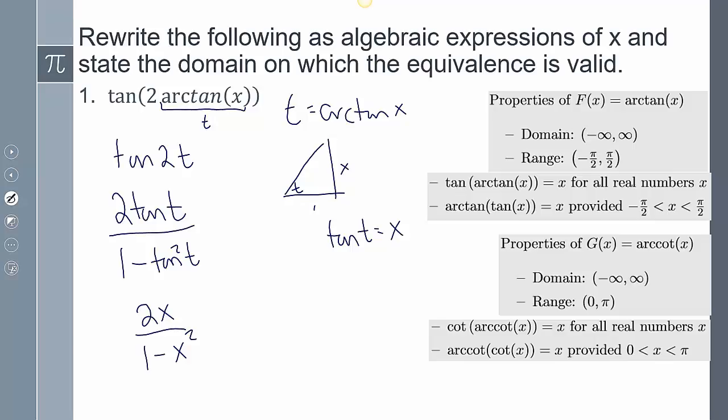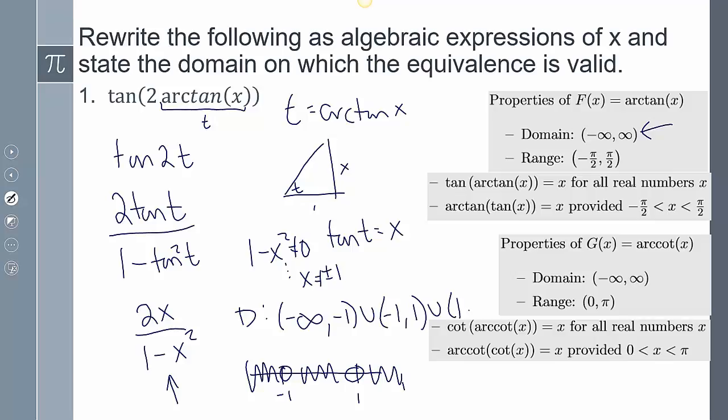And so now I'm going to find the domain on this. And so my domain, normally for tangent, is going to be negative infinity to positive infinity. But I can't divide by 0. And so I have to say 1 - x² cannot equal 0. Now when you solve for that, you're going to get x equals ±1. And it can't equal that. So that means on a number line, if I were to draw that out, can't equal that, can't equal that. But it can equal everything else. So that's going to be (-∞, -1) union (-1, 1) union (1, ∞). And that's going to be my answer.